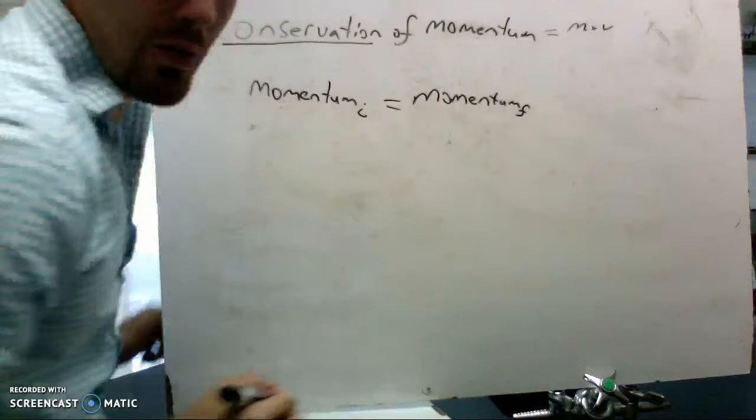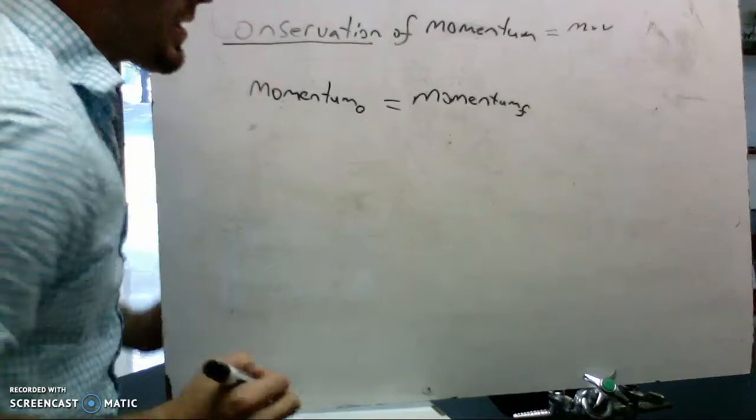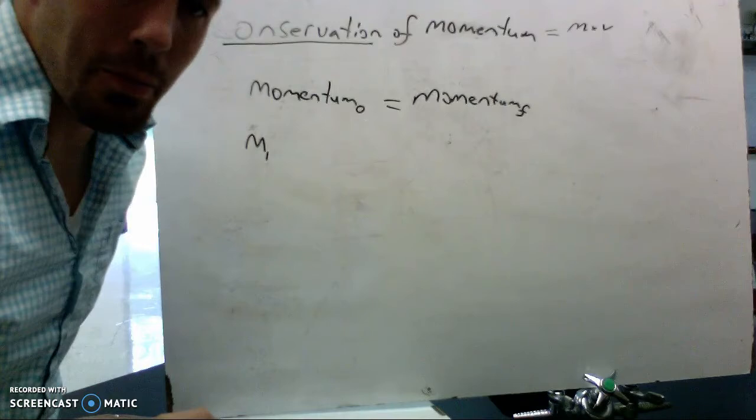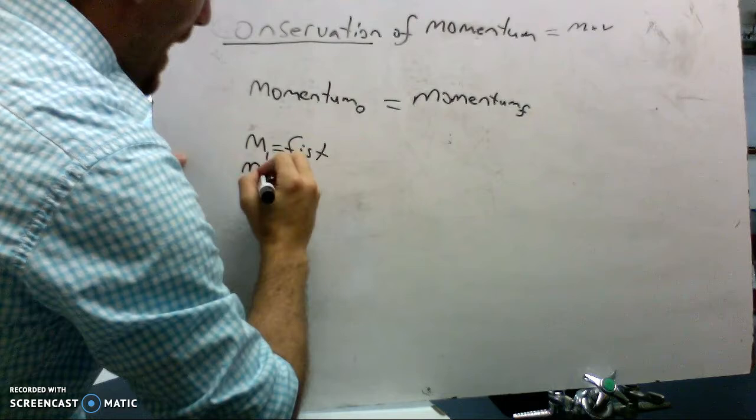So momentum I and momentum F. Sometimes instead of using the term I, I use momentum O, as in the beginning as well. And so we can detail this as well. If I'm looking at my fist and my hand as being two different objects, I can say the mass of my first object is my fist. And then the mass of my second object is just my open hand.